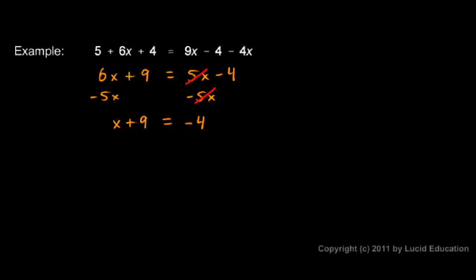x plus 9 equals negative 4. Now to solve for x I get rid of the 9 on the left by subtracting 9. And the rules say that whatever I do on one side I do on the other. So if I subtract 9 on the left I subtract 9 on the right.